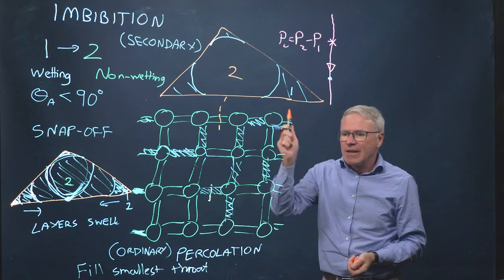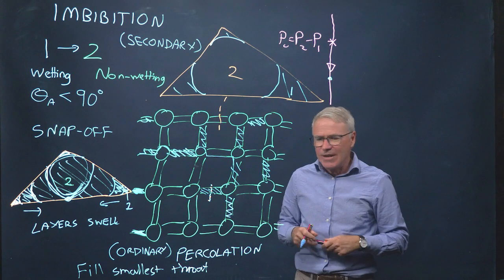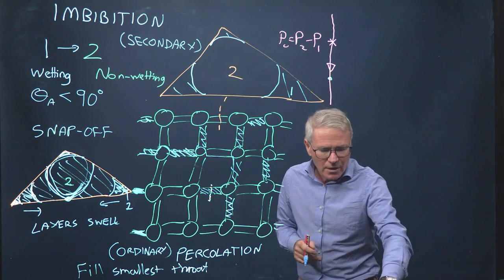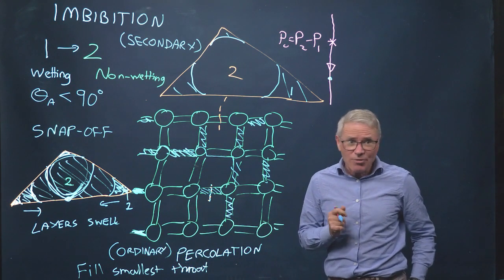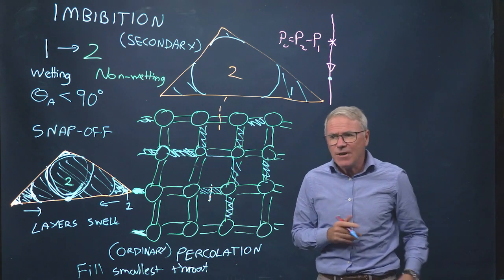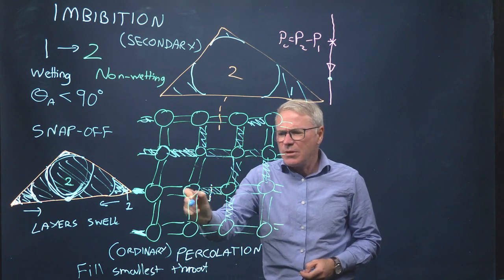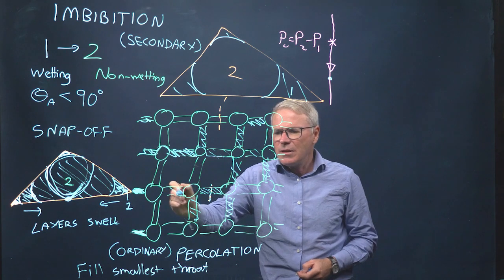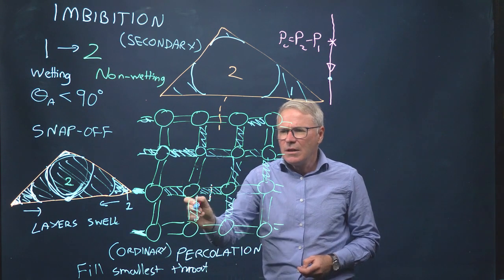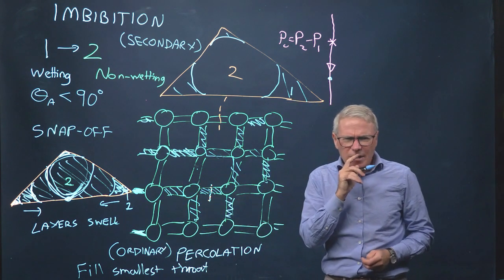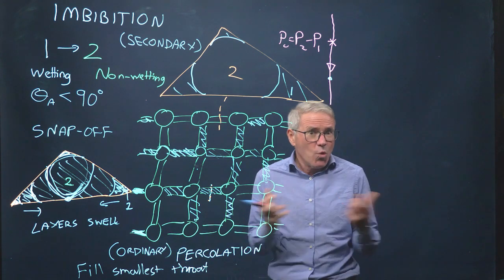So imbibition can be described as percolation — ordinary percolation — and you're filling basically always the smallest throat. This has two interesting consequences. The first one is: I keep doing this, and now I want to fill the next element. But in invasion percolation, I could just keep filling and filling, and the water escapes through the wetting layers.